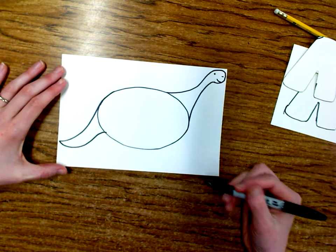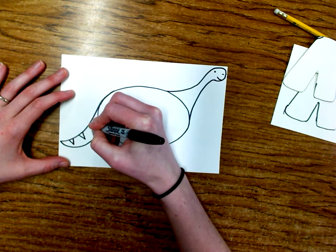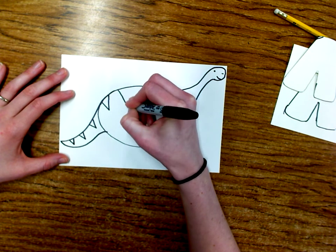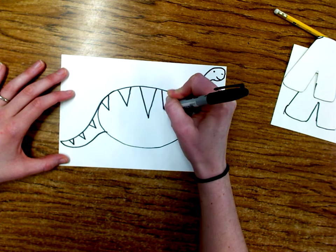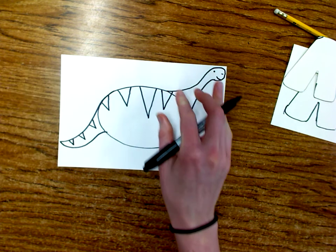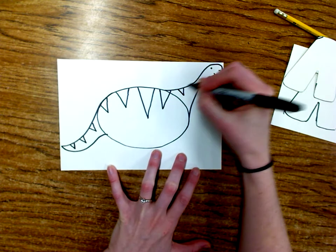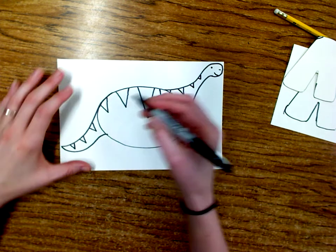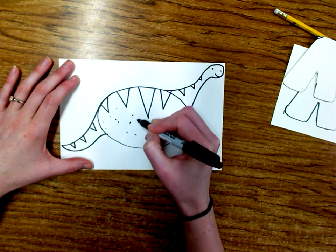So maybe I'm gonna add some just different triangles here, create some designs on its back. Maybe you're doing a dinosaur that has spikes or ridges or something along the back, so you could add that. I'm gonna do the same thing up my dinosaur's neck here and then I'm gonna add a little bit of texture, so I'm just gonna add some simple dots so it looks like the skin is a little bit rough.